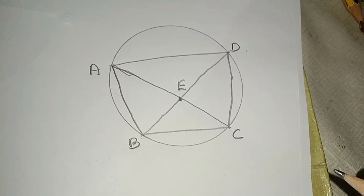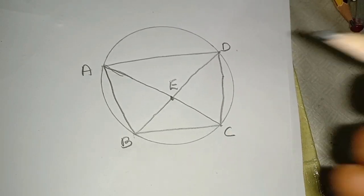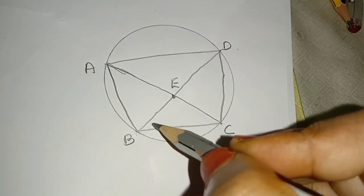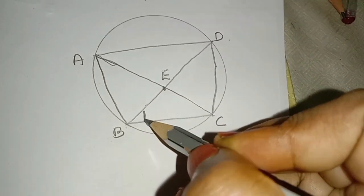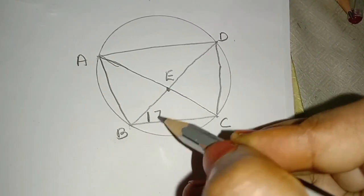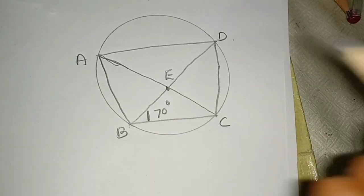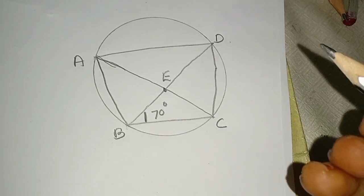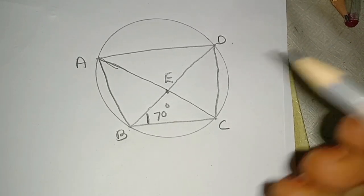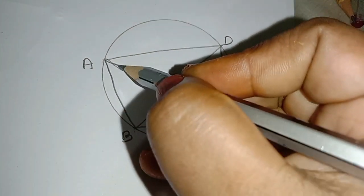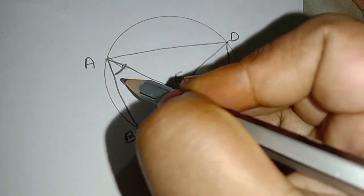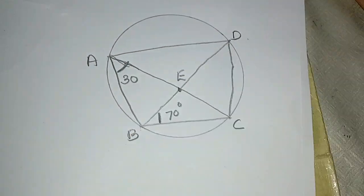Now, angle DBC — that is, angle at D, B, C — is 70 degrees. And angle BAC — angle at B, A, C — is 30 degrees. These are the given angles marked on our diagram.